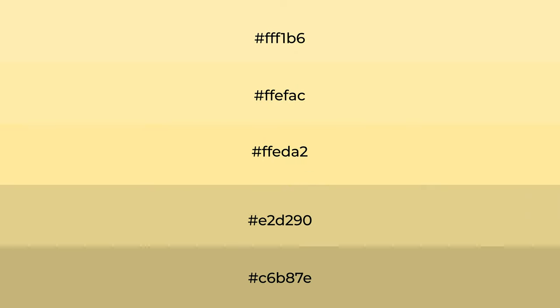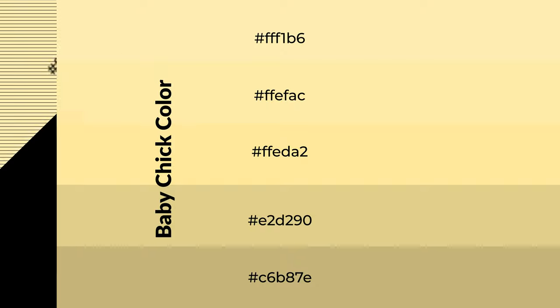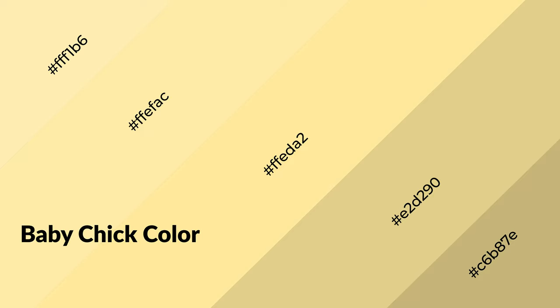To generate shades of a color, we add black to the color. Shades are used in patterns, 3D effects, and layers. Shades create depth and drama. Baby chick is a warm color and it emits cozier and active emotions.